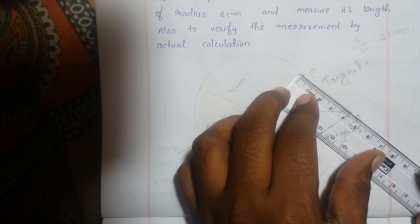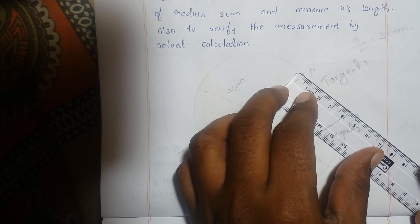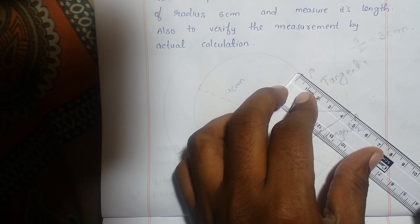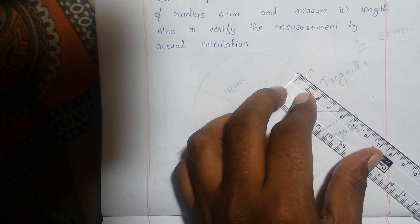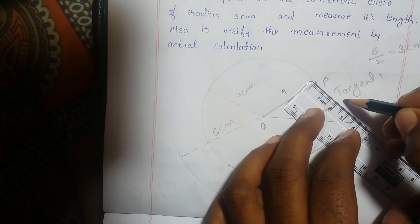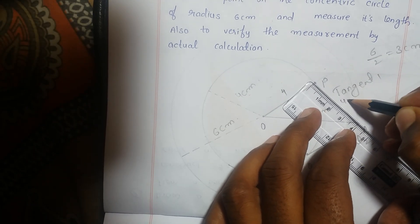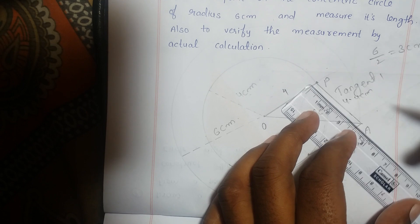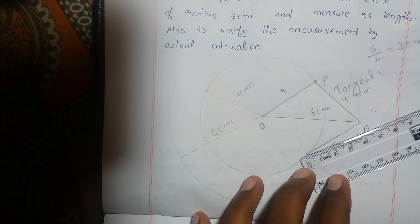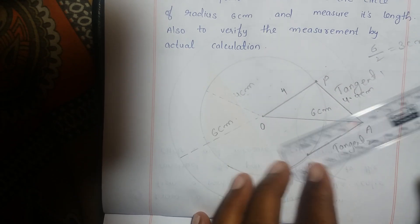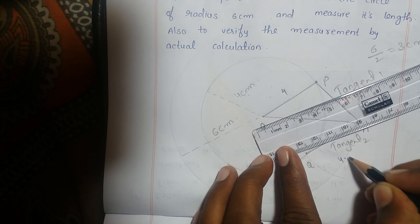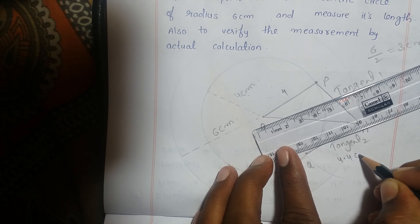Measuring the tangent length — it is approximately 4.4 cm. The second tangent is also approximately 4.4 cm.